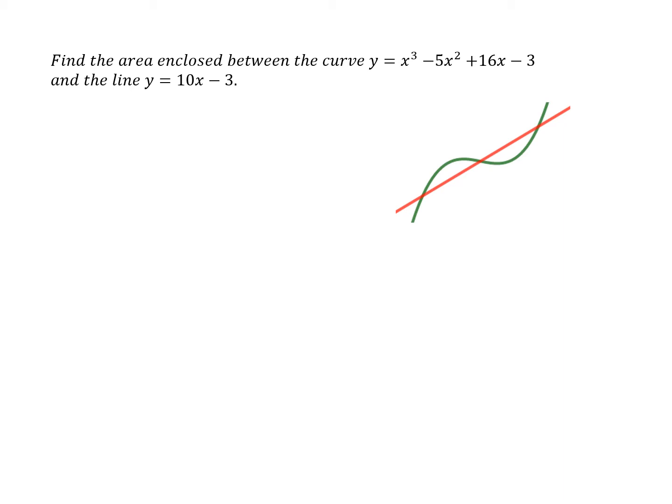The key thing is to find the points of intersection, and we do that by setting x³ - 5x² + 16x - 3 equal to 10x - 3.